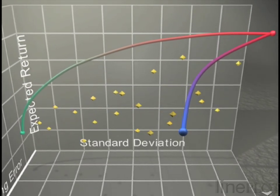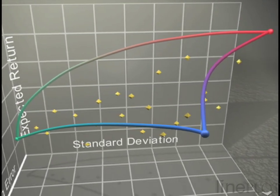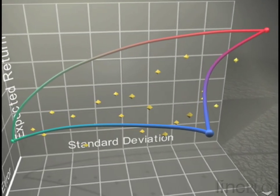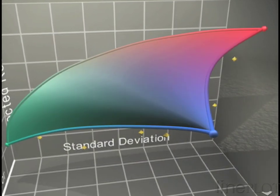The third boundary of the efficient surface comprises combinations of the minimum risk mean variance portfolio shown in green and the blue benchmark. The efficient surface lies within these three boundaries.